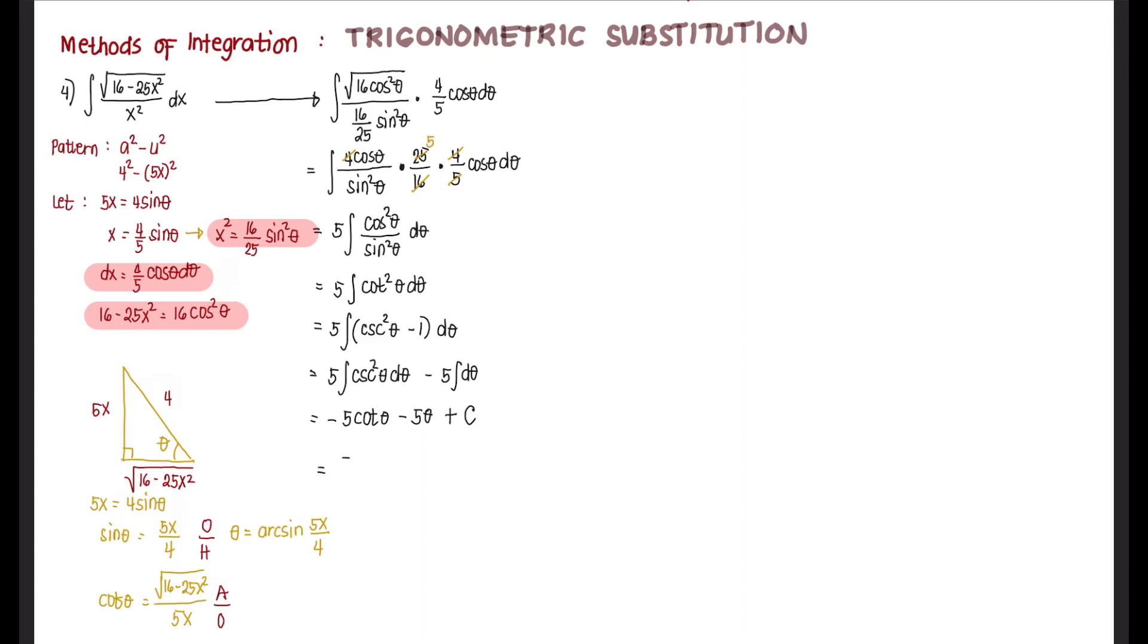We have negative 5 cotangent: square root of 16 minus 25x squared over 5x minus 5 arc sine of 5x over 4 plus c.